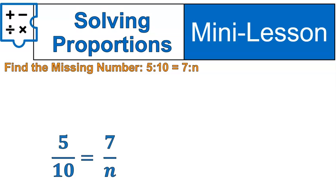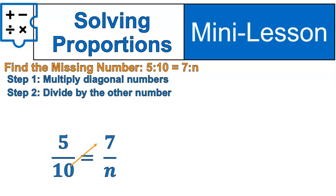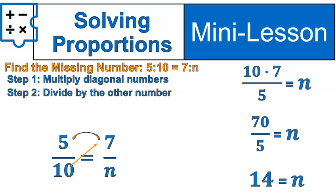Find the missing number with this proportion: 5 to 10 is 7 to n. Notice I wrote the question in colon form, but when I'm solving it, I rewrite it in fraction form. Now, I'm just going to go through the steps. I find the numbers that are diagonal of each other. In this case, it's the 7 and the 10, so I'll multiply those numbers: 10 times 7. Then I divide by the other number. So that's going to look like this: 10 times 7 divided by 5. 10 times 7 is 70, and 70 divided by 5 is 14. 14 is our letter n.